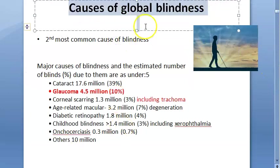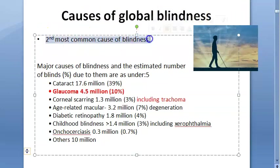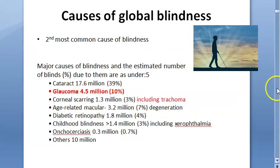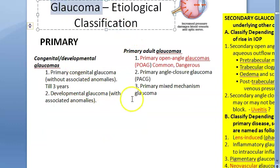We are reading about glaucoma because it is the second most common cause of blindness in the world. Cataract is first, then glaucoma, then trachoma. So cataract and glaucoma are very high-yield topics.